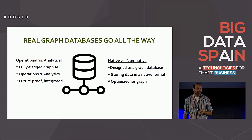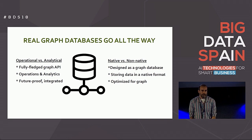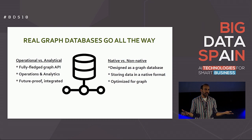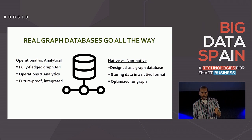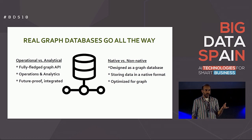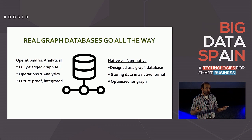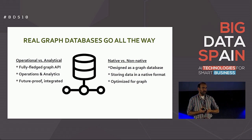A real graph database is one that goes all the way. According to my definition, if you want to use a graph database you should make sure it has an API covering the whole spectrum — create, read, update, delete — and you should be able to do that using a unified graph API and query language. It's not good enough if somebody says you can do inserts using SQL but use a graph API only for analytics. That doesn't make it a graph database.